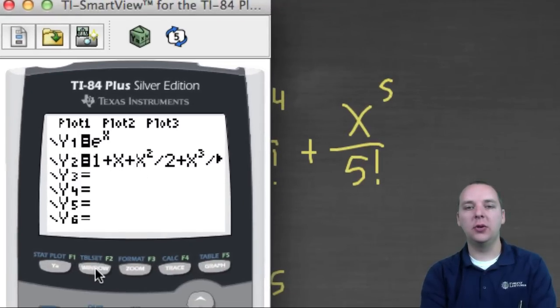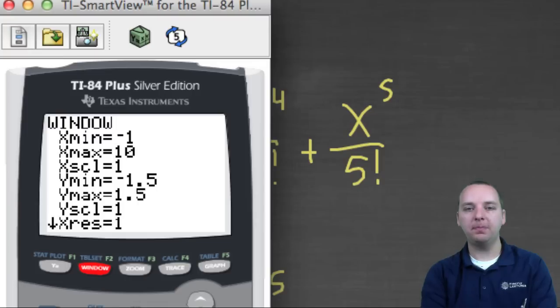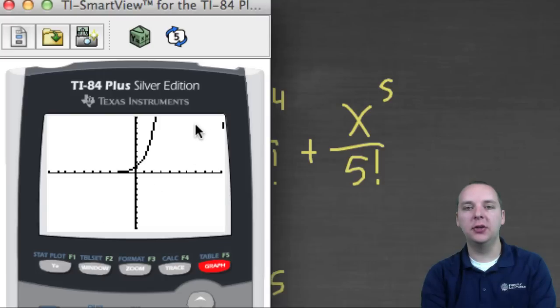And so now if we adjust our window and all that good stuff, here let's adjust our window minus ten to ten, and just kind of your standard minus ten to ten for the y's as well. And then we will push graph, and the first one you'll see is the exponential curve, and then here's the degree five polynomial.